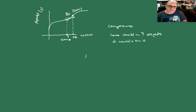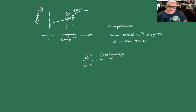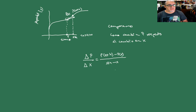La tasa de cambio es la delta, es decir, la diferencia de las P sucesivas sobre la diferencia de las X sucesivas, que en nuestro caso es P de X más H menos P de X, sobre X más H menos X. La diferencia entre estos dos nos va a dar H. Entonces, ¿cuál es la diferencia entre el punto que estamos considerando y el punto de donde partimos? Esa es la que nos va a interesar.